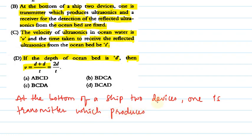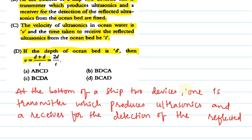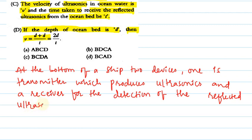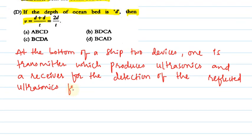Ultrasonics — what are ultrasonics? The wave whose frequency is greater than 20 kilohertz. And a receiver for the detection of the reflected ultrasonics from the ocean bed are fixed. This is Statement B, the first statement.